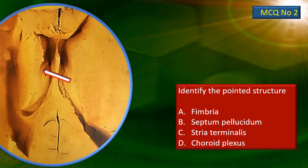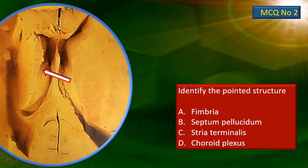MCQ number 2. This is a close-up view of the same section that you saw in the previous slide. Once again, there is a flashing arrow — identify what that structure is. The four choices are given and obviously one of them is the correct answer.